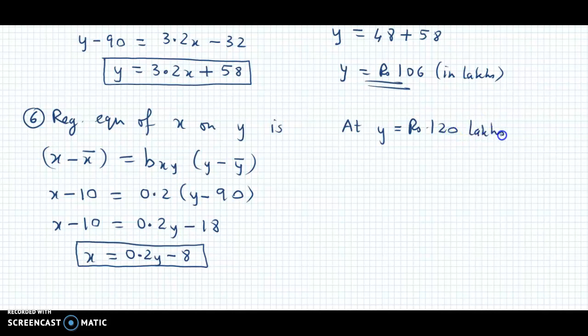Let's see what x's value comes to. x would be equal to 0.2 × 120 - 8. Let us simplify this. 0.2 × 120 is 24, minus 8. So x's value comes to ₹16 lakh.